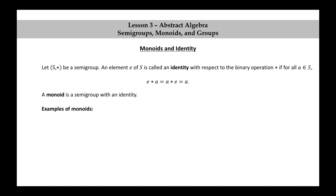Let's look at some examples of monoids. The natural numbers together with the operation of addition is a commutative monoid with identity zero. We already discussed that this was a commutative semigroup, and it has an identity of zero because whenever you add zero to any natural number you get that natural number.